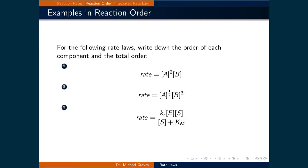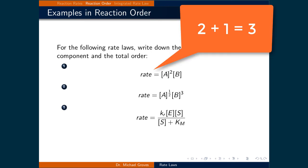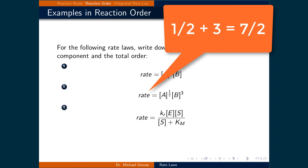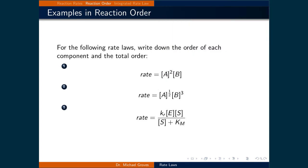Let's look at a couple of examples in reading the order from rate law expressions. In the first example, we can simply read the order from the expression: component A has an order of 2, component B has an order of 1, and the total order is 3. In the second example, component A has an order of 1/2 and component B has an order of 3. The order need not be whole integers, so the total order is 7/2.